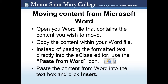When moving content from Microsoft Word, first open the Word file that contains the content you wish to move and copy the content from the file. Instead of pasting the formatted text directly into the text editor, use the Paste from Word icon. This icon resembles a clipboard with a blue W that resembles the Word icon. Next, paste the content from Word into this text box and click Insert. You will then be able to edit and make changes to your content that you've pasted in from Microsoft Word.